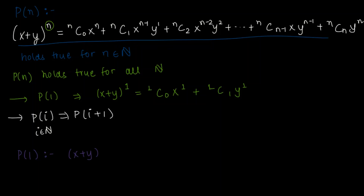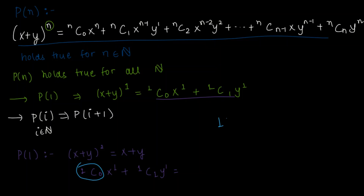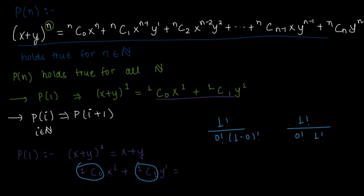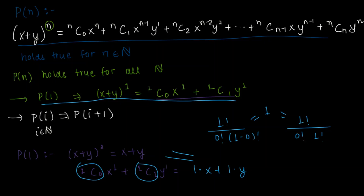Let's prove both statements. For the first one, (x + y)^1 is just equal to x + y. On the right-hand side, 1C0 is 1! / (0! · 1!) = 1, and 1C1 is 1! / (0! · 1!) = 1 as well. So both equal one, giving us 1·x + 1·y = x + y. Since both sides are equal, we have established P(1).